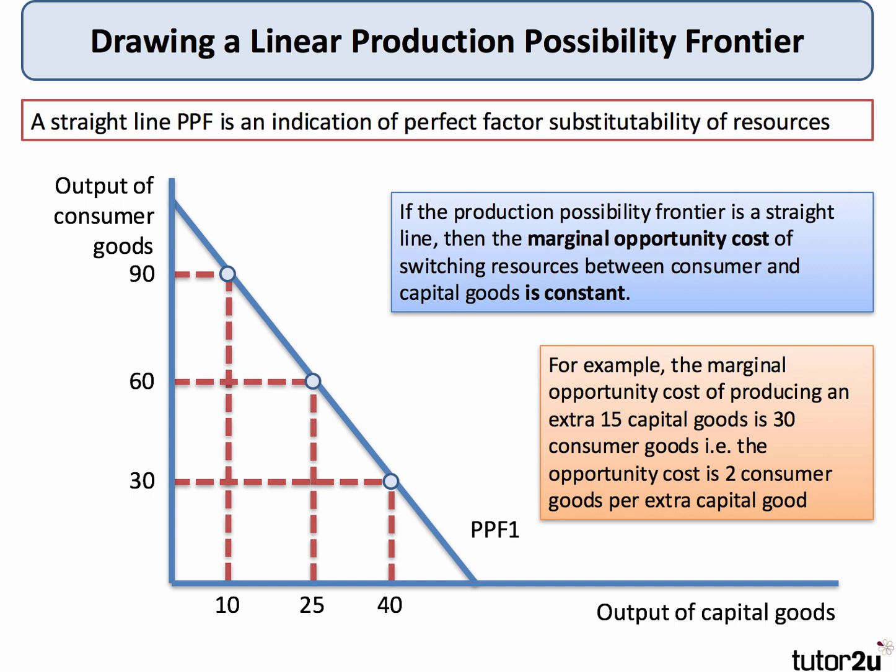We can also draw a PPF as a straight line, which suggests perfect factor substitutability — in other words, no diminishing returns. If the PPF is a straight line, then the marginal opportunity cost of switching resources, in this case between consumer and capital goods, will be constant. In our example here, as we shift production towards more capital goods, the marginal cost of an extra 15 units of capital goods is 30 units of consumer goods — 2 consumer goods per extra capital good. So when the PPF is a straight line, the marginal opportunity cost is constant.